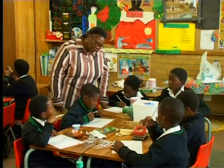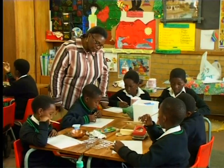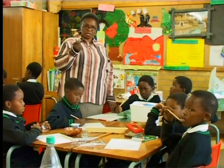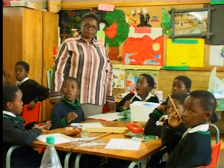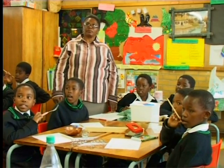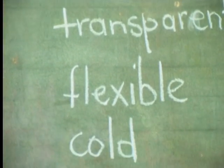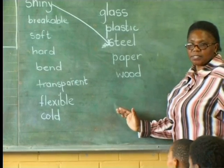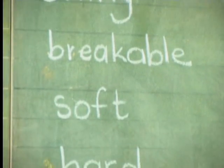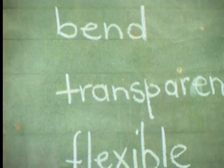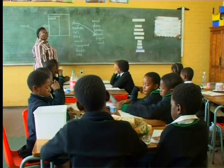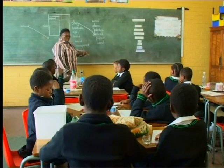What do you have in your list? I have scissor, plate, stapler, plate. Children, listen — we are going to tell me now the properties of these materials in front of you. If you look at the chalkboard, do you see those words — shiny? Can you read them? If you have something you don't understand, just ask me.